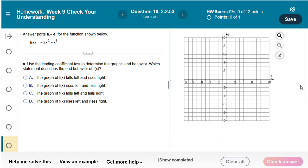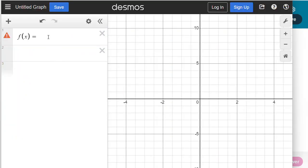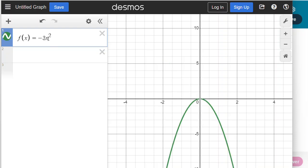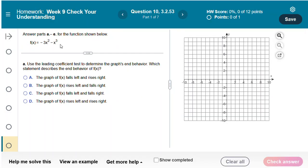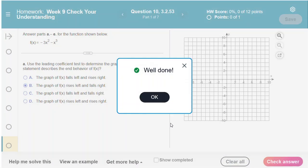My graph here is negative 3x squared minus x to the third. Here's my graph. I can see that it is rising on the left and falling on the right and that should make sense because I have an odd degree and a negative leading coefficient. I'm going to choose answer choice B and that's correct.